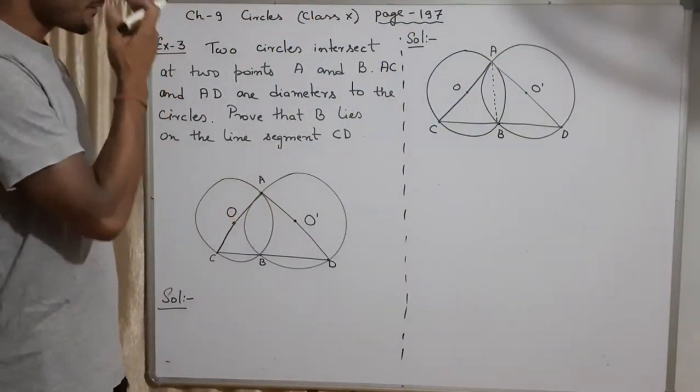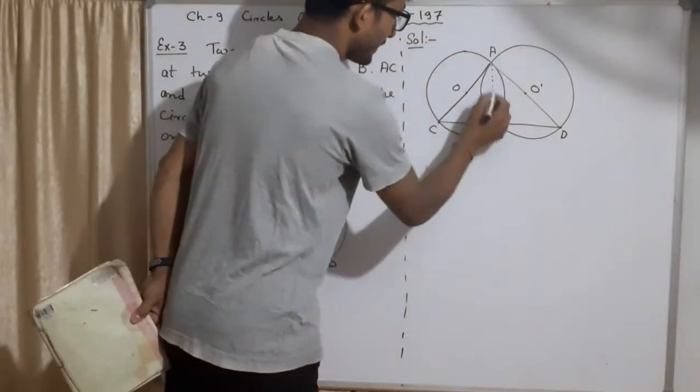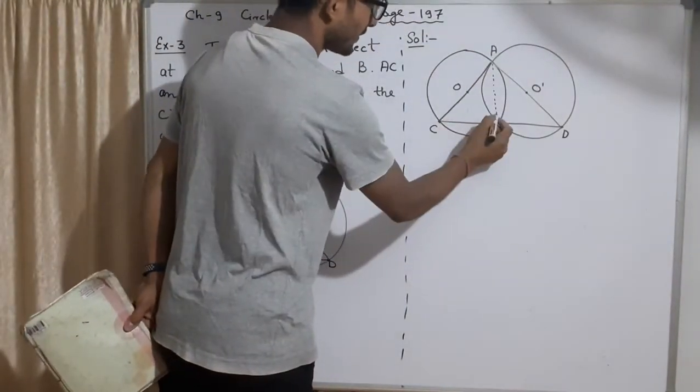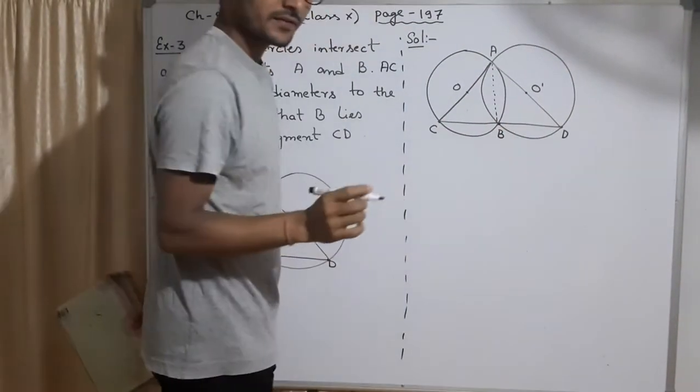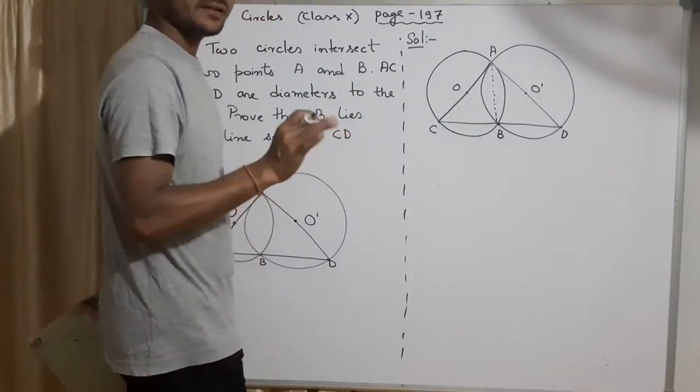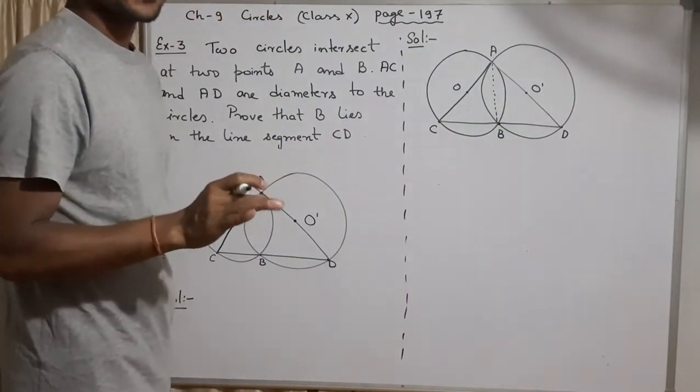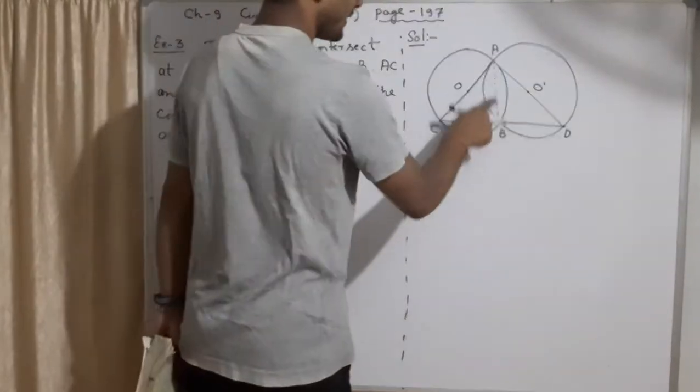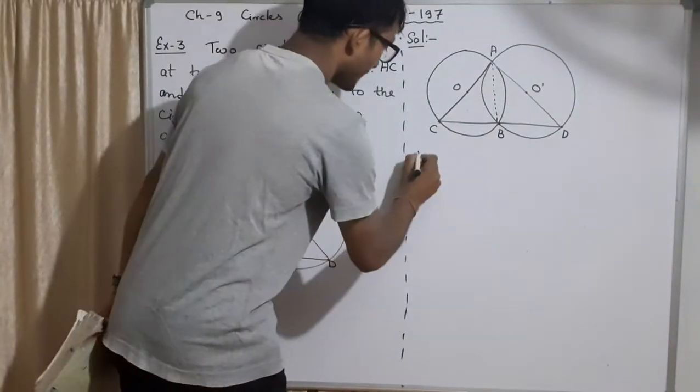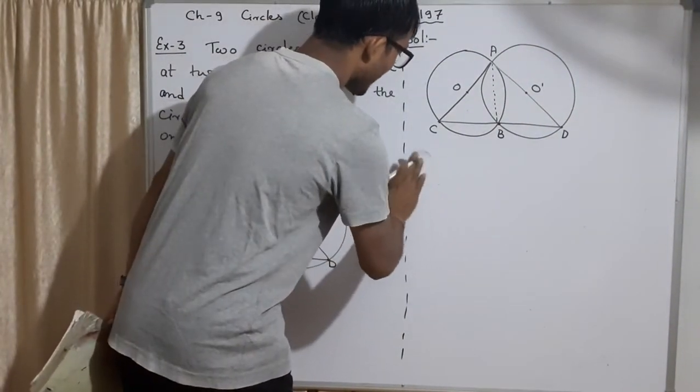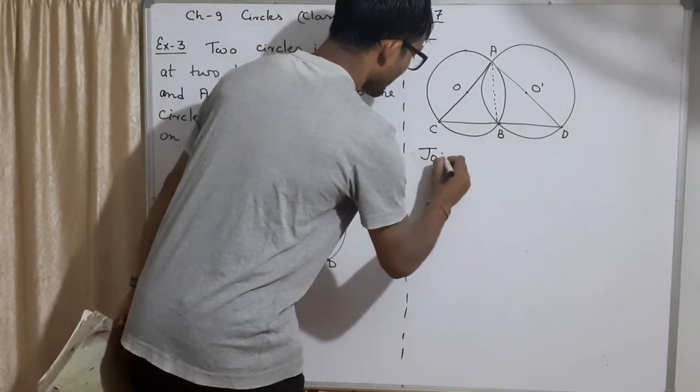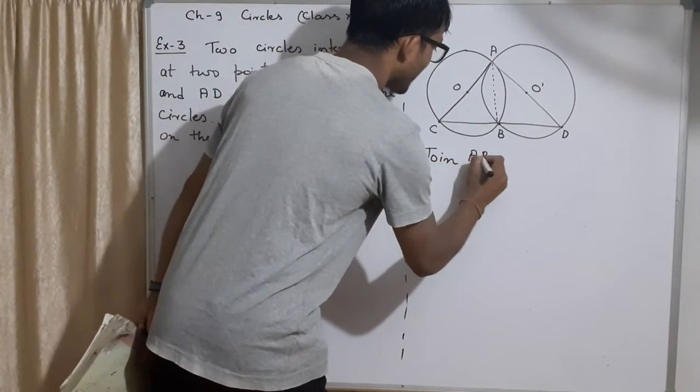Now, now you look at very easily, you can see that ABC, this angle is 90 degree. What is the reason? Reason is theorem 9.3. The angle at the semicircle is 90 degree. Same way ABD is also 90 degree. Here, here first you write join AB.